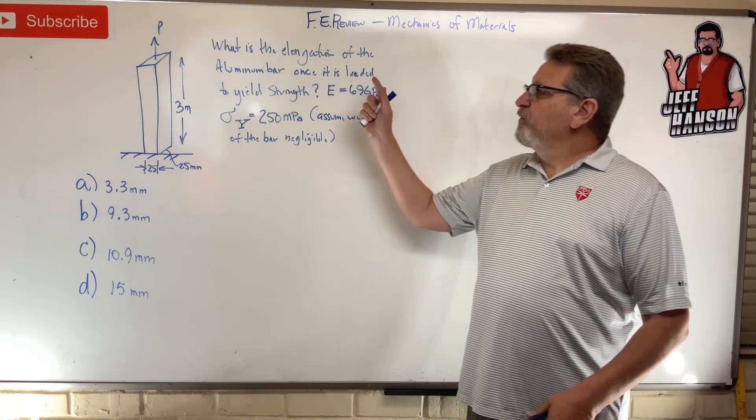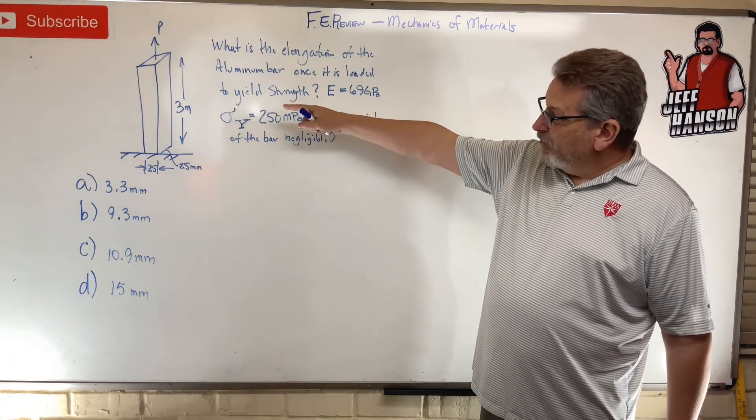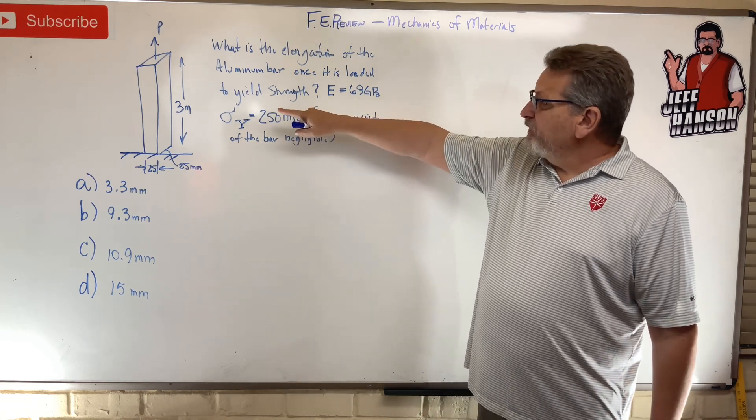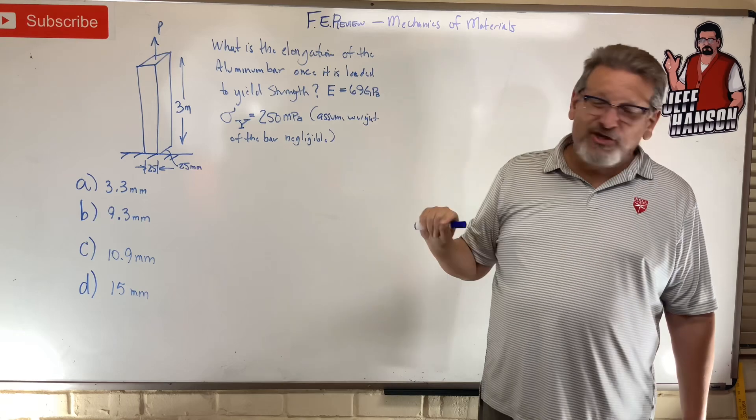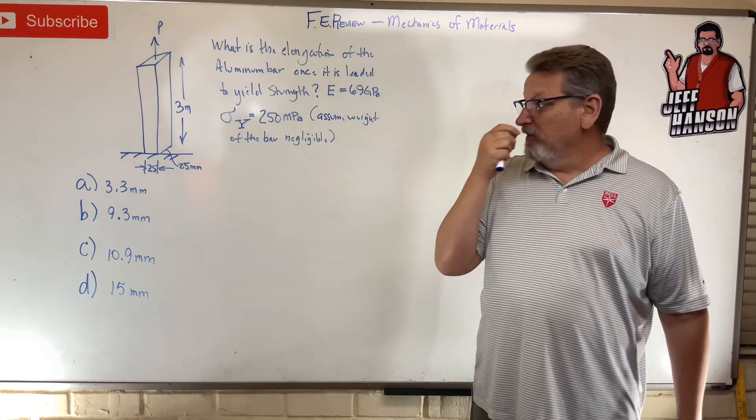Hey friends, welcome back. FE review problem, mechanics and materials. We've got a rectangular bar, actually it's a square, 25 by 25 by 3 meters long. What is the elongation of the aluminum bar once it's loaded to yield strength?